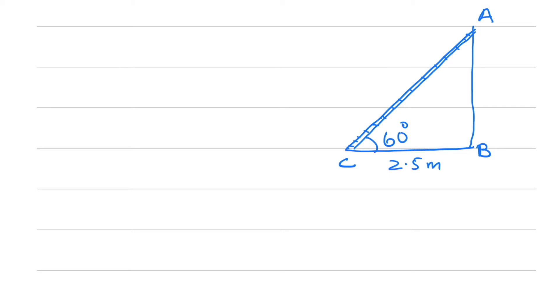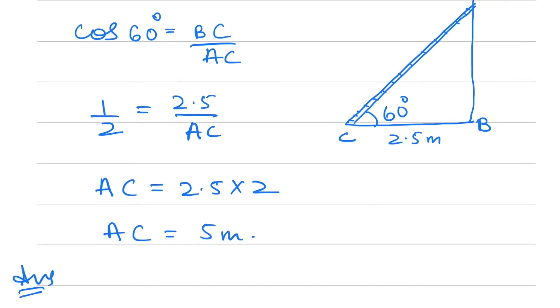We have to find AC and we are given BC. So cos 60° = BC/AC. Cos 60° equals 1/2, and BC is 2.5, so 1/2 = 2.5/AC. Therefore, AC = 2.5 × 2 = 5 meters. The length of the ladder is 5 meters.